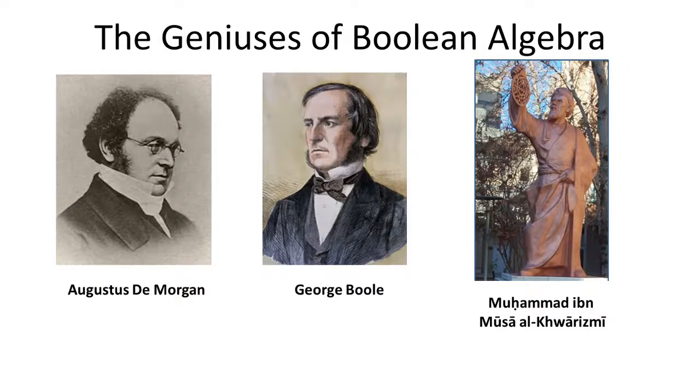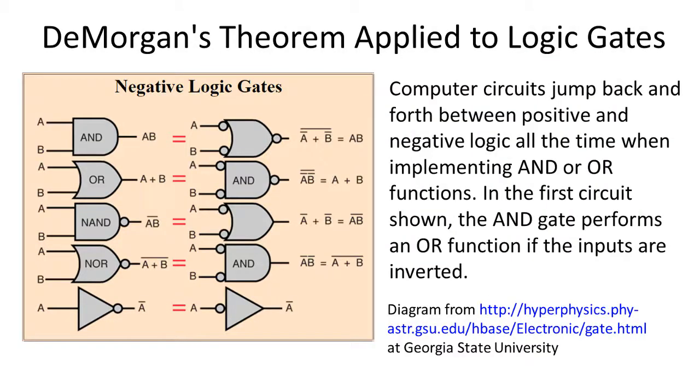DeMorgan's theorem is named after Augustus De Morgan, a 19th century British mathematician who is instrumental in developing some of the math behind Boolean algebra, which in turn is named after George Boole, another 19th century mathematician. Algebra is derived from the Arabic word al-jabbar and comes from the writing of a Persian mathematician Muhammad ibn Musa al-Khwarizmi. DeMorgan's theorem is used extensively in computer hardware to reduce the amount of circuits needed to implement the logic.